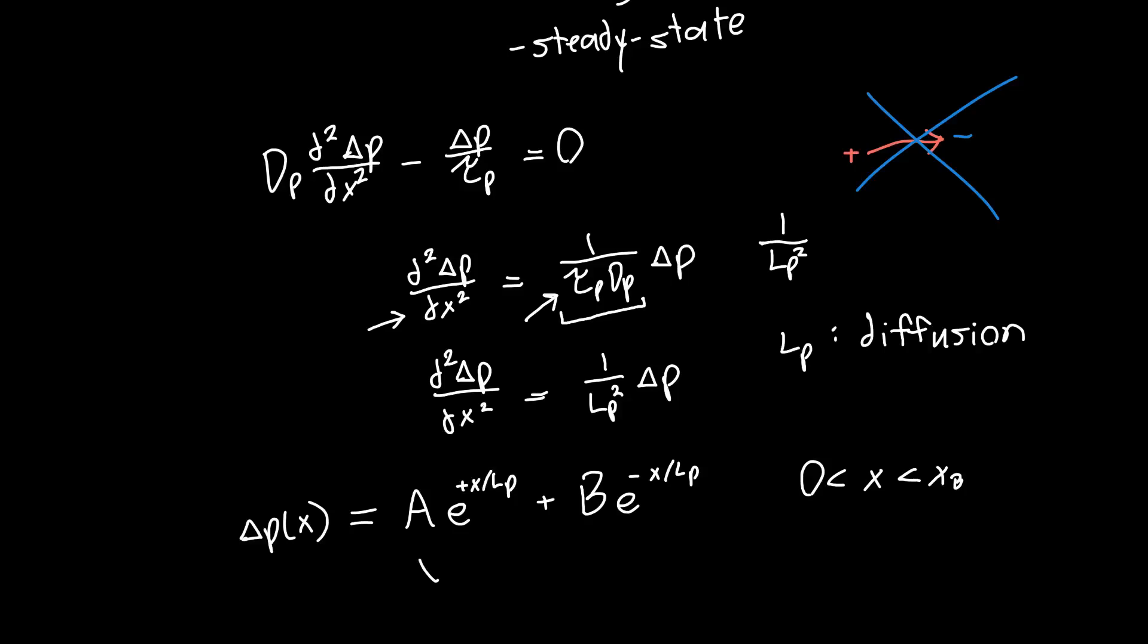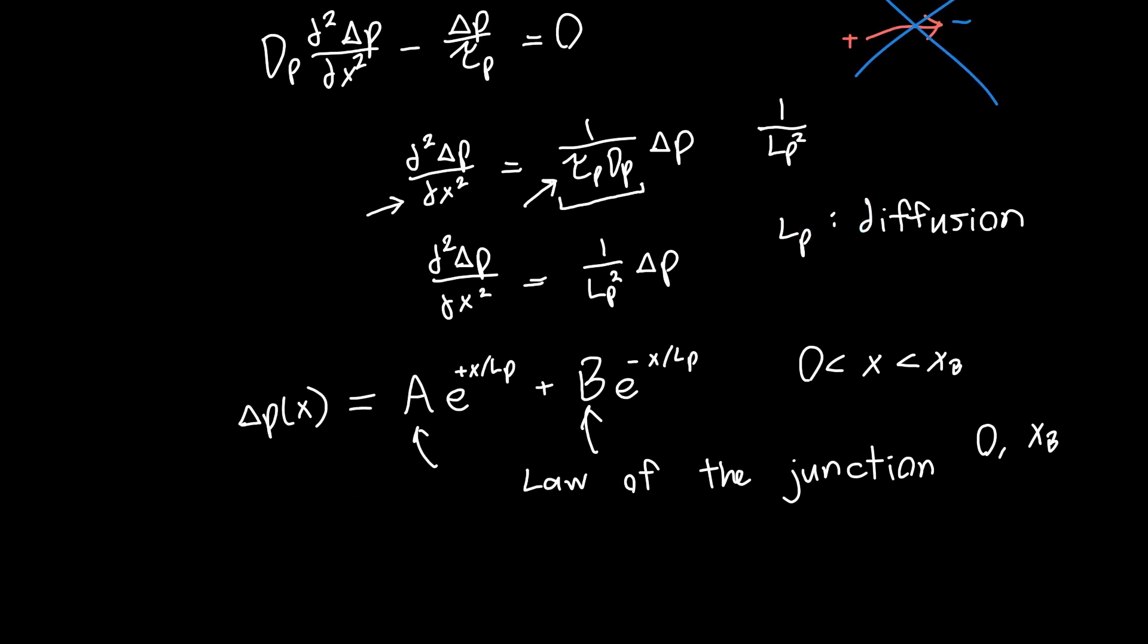And in order to solve for these A's and B's, we need to apply the law of the junction. So if we apply the law of the junction at each boundary, so at zero and xB, then we can find these A and B coefficients. And the actual derivation for this is extremely ugly. And I go through something basically identical in my video on the finite length diode video. So if you're interested in carrying out all the math and how to do it, I'd point you in that direction.